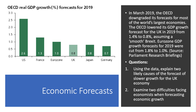In March 2019, the Organisation for Economic Cooperation and Development downgraded its forecast for most of the world's biggest economies, including the UK. The forecast growth fell from 1.4% to less than 1%, and they also cut the forecast growth for the eurozone economy. The chart here shows the forecast growth for GDP for the United States, France, the eurozone, the UK, Japan, and Germany.